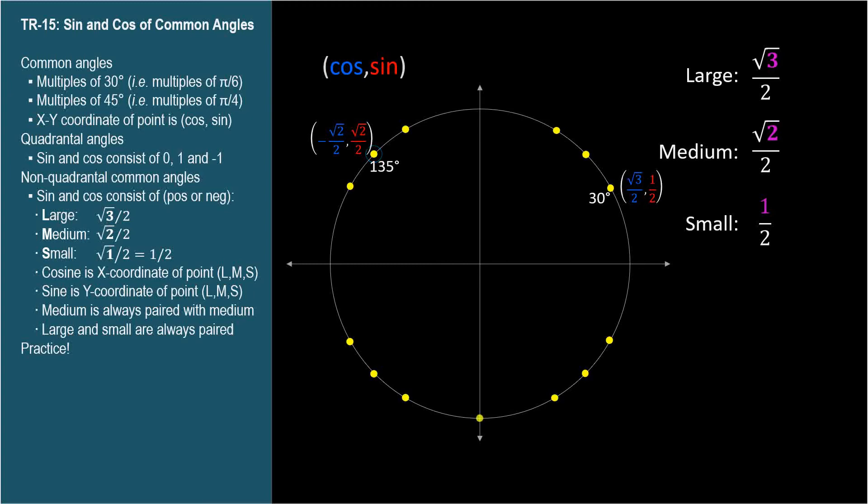How about this one? Two-seventy degrees. Let's not forget the quadrantal angles, just because they're so easy. The cosine is zero, the x-coordinate, and the sine is negative one, the y-coordinate.